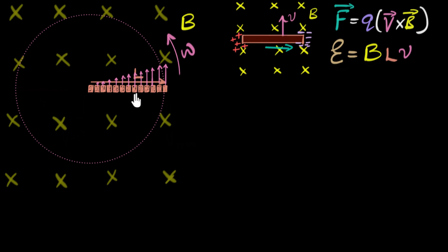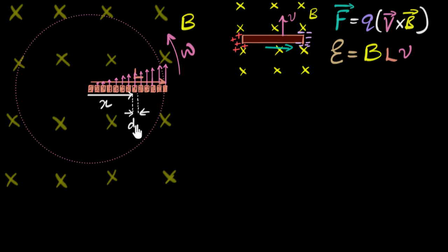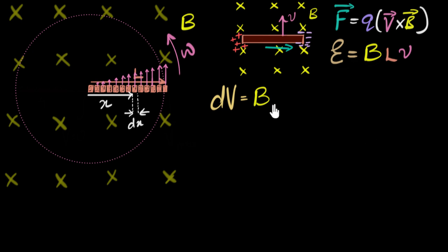Let's pick a piece at some distance x from the center. The length of this piece is dx, an increment in x. Focusing only on this piece, the potential difference — which is the same as the EMF — for that piece is going to be the magnetic field B times the speed at which that piece is moving, times the length dx. So we write dV = B times V times dx.